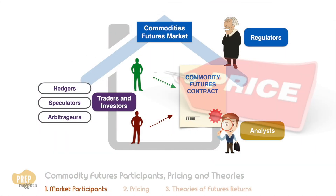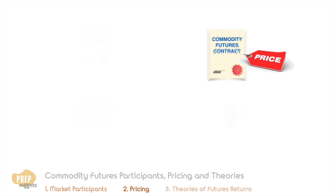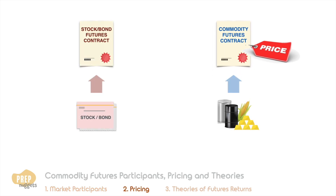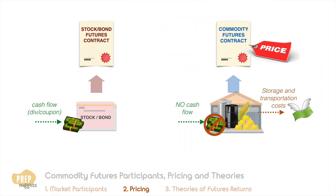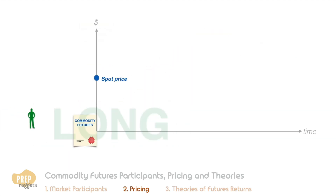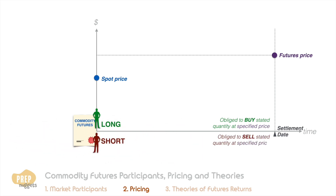Let's now turn our attention to how commodities futures are priced. The approach has to be somewhat different from the valuation of stock or bond futures, as commodities are physical assets with no cash flows. Besides, physical assets may incur storage and transportation costs. A futures contract for a commodity is an obligation to the long to buy a stated quantity of the commodity at a stated price on a specified date in the future. The short is obliged to sell according to these terms.